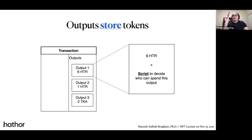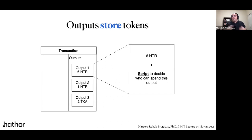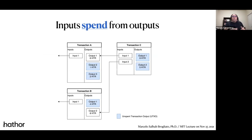Besides the number of tokens and the type of token, outputs also have a script. A script basically decides who can spend this output — it's related to the ownership of that output. Controlling an output means you know how to solve the script. We also have inputs. What are inputs? Inputs spend outputs — they expand outputs.